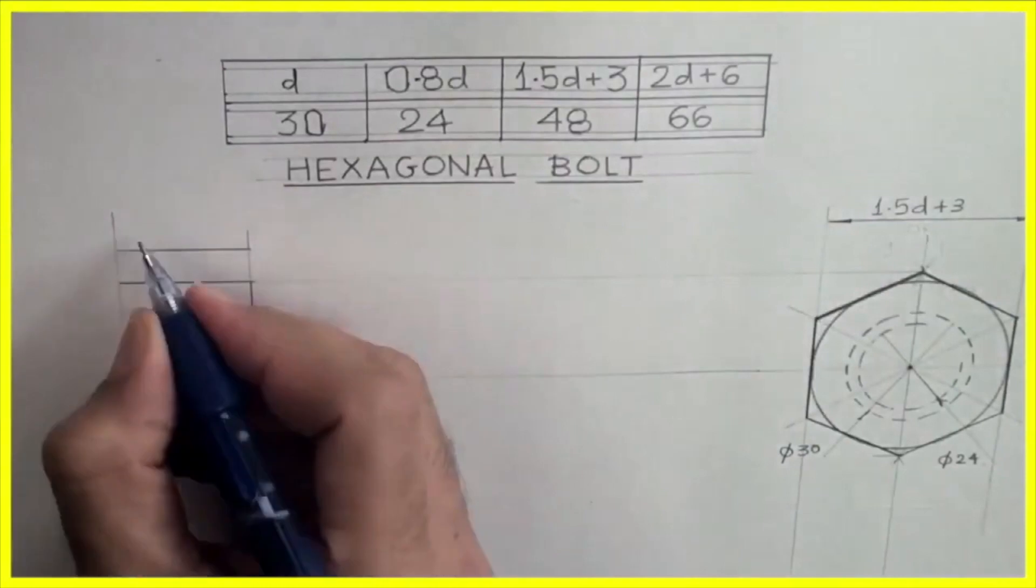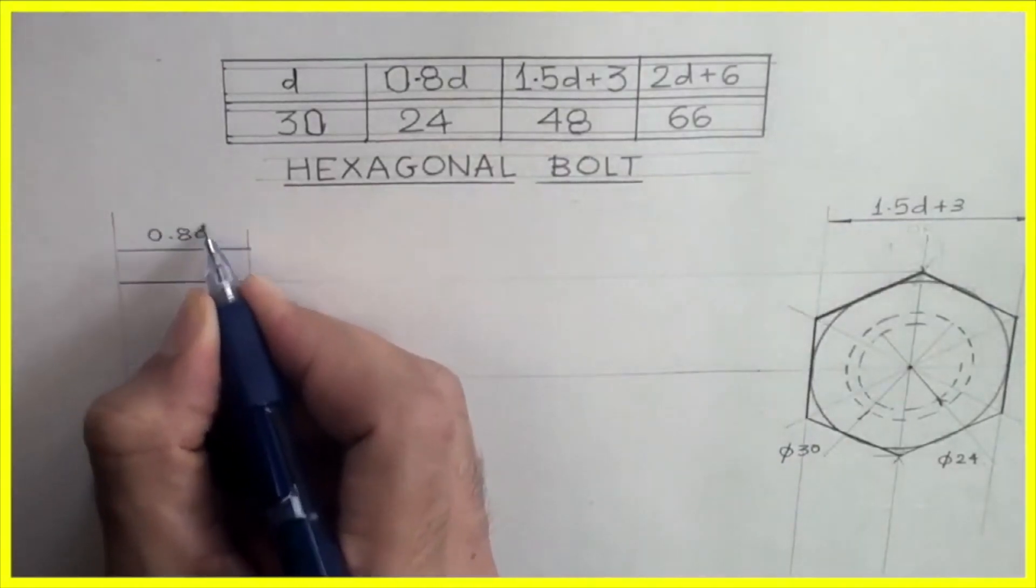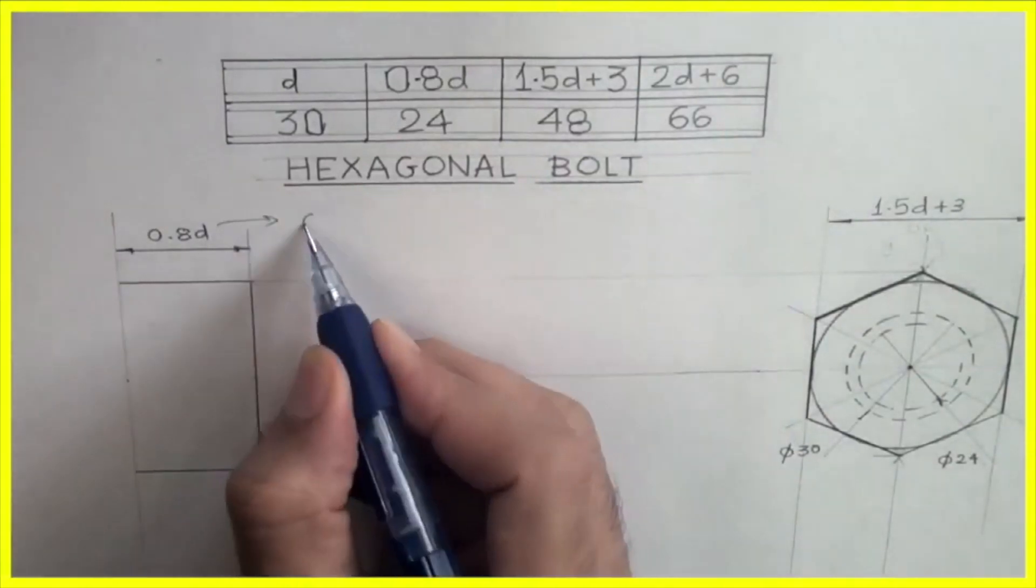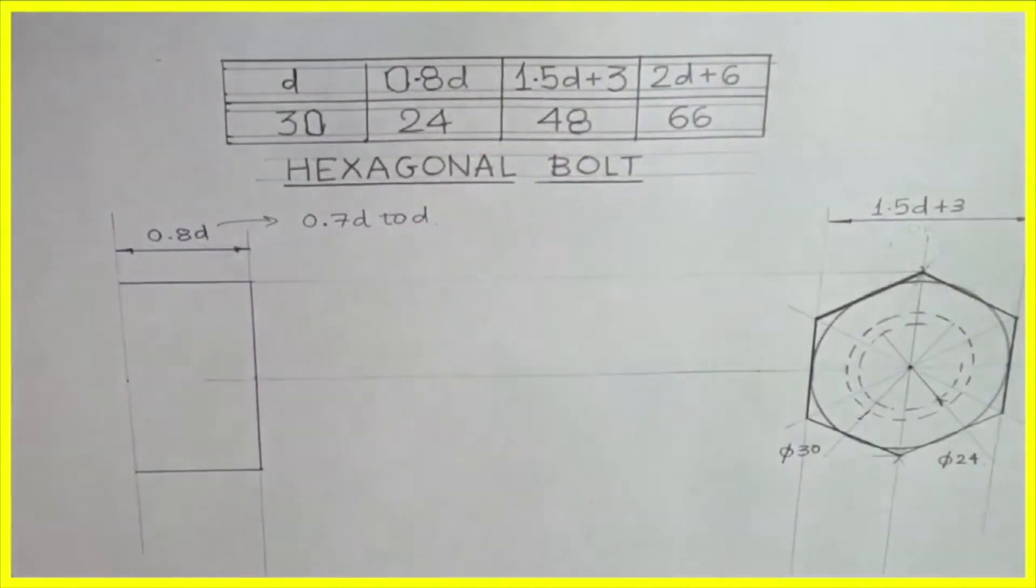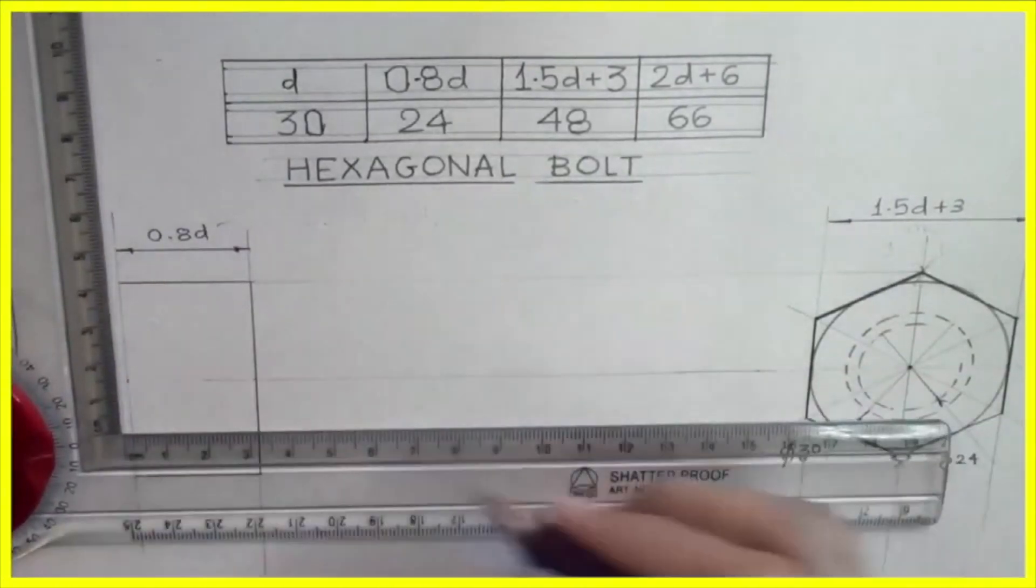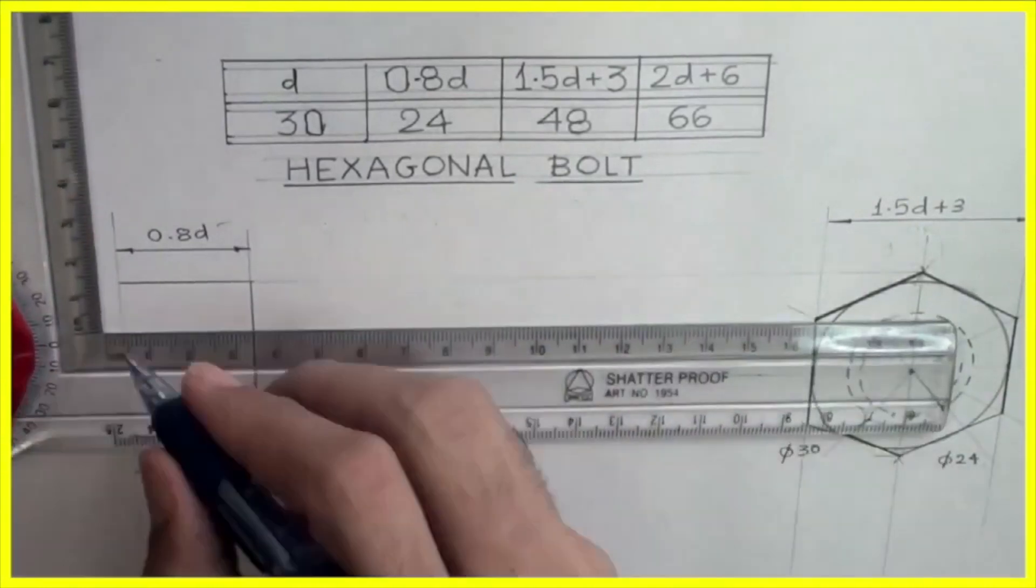This can be 0.8D. Generally we can take anything between 0.7D to D, but in this case we are taking 0.8D. After that I am extending this line and this line.